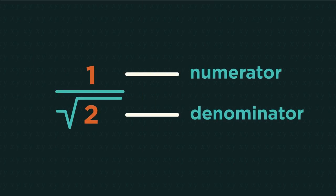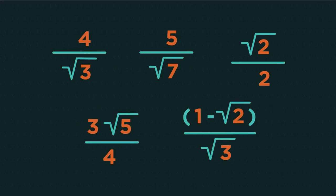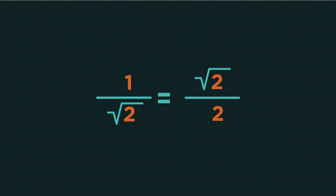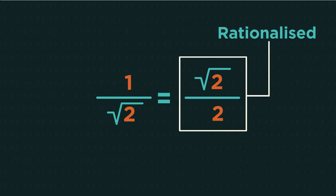We know that the denominator is the bottom part of a fraction. So have a look at these. What do you notice about those that are rationalized and those that aren't? Rationalizing the denominator is when we move a square root from the bottom, the denominator, to the top, the numerator.